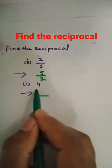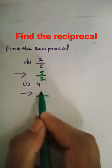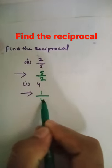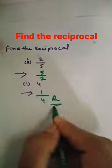Here, they didn't give anything, which means one is there. So one will go up and four will come down. These are your answers.